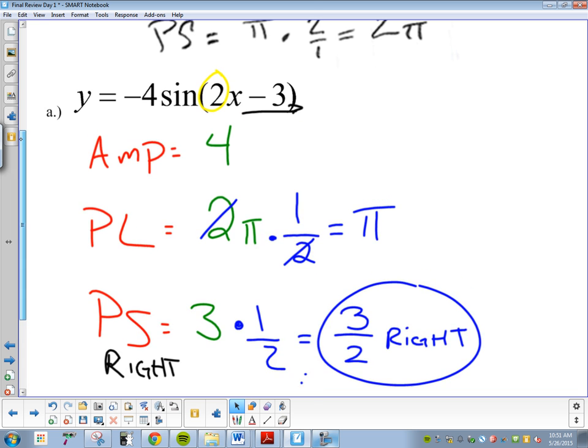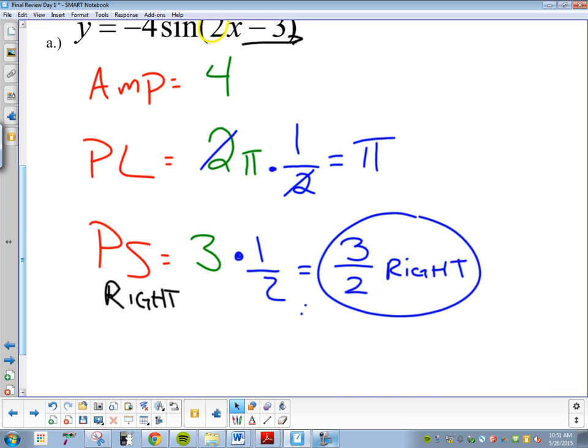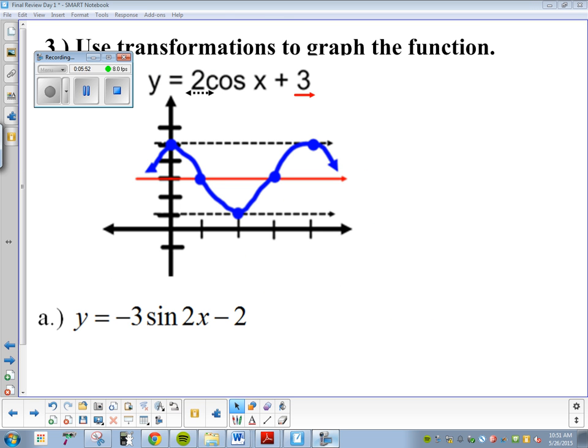Amplitude is the number in front. Period length start with two pi and multiply by the reciprocal. Phase shift, whatever's in parentheses and multiply by the reciprocal. Questions on anything there. Let's go to question three.